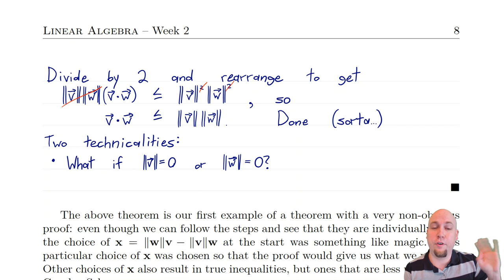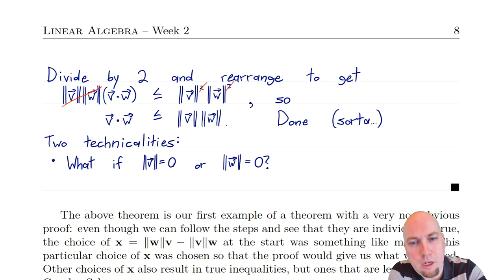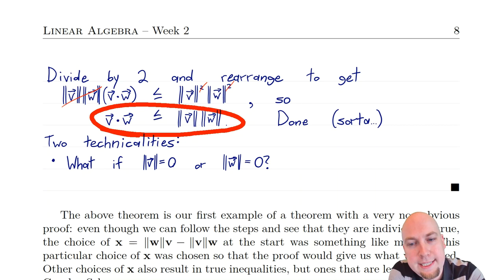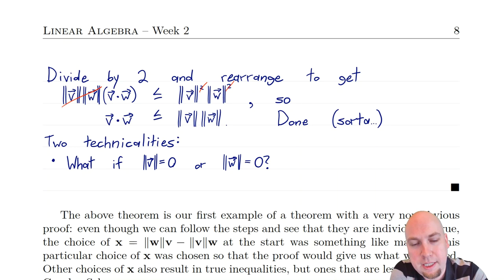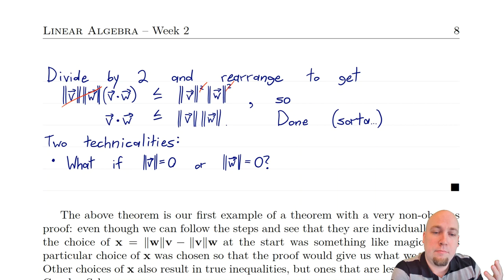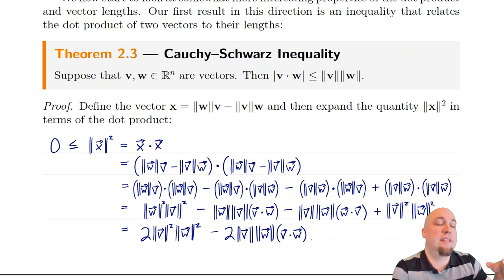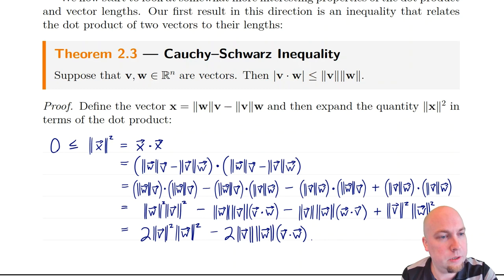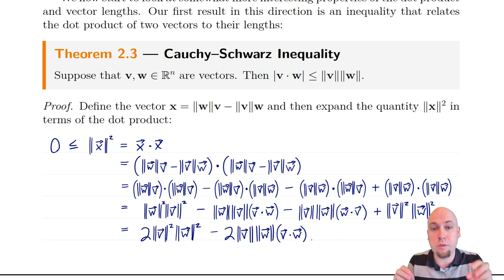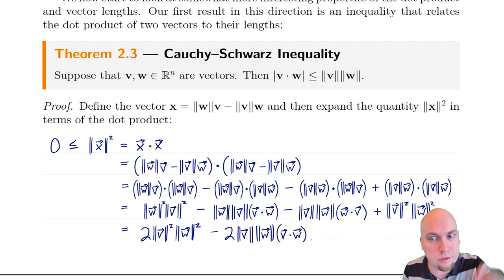The first technicality: what if the length of v or the length of w is zero? To go from the step where we have squared lengths down to the next step, I divided by the length of v and divided by the length of w. But if either of those lengths is zero, I can't do that division. The fix is to consider those two cases separately. The argument works fine when all lengths are non-zero. If the lengths are zero, then the vector is zero, and the inequality just says zero is less than or equal to zero — which is true.